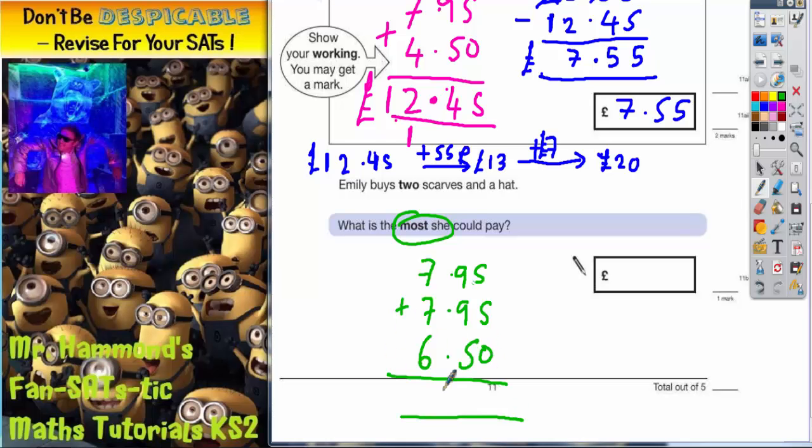Now if we add all these prices together, we'll have 2 scarves and the most expensive hat. 5 plus 5 plus nothing is 10, carry the 1. 9, 9 is 18, plus 5 is 23, plus 1 is 24. Put your 4 in, carry the 2. 7 plus 7 is 14, plus the 6 is 20, plus the 2 is 22. So she's going to be spending £22.40, which is the answer we need to write in there.